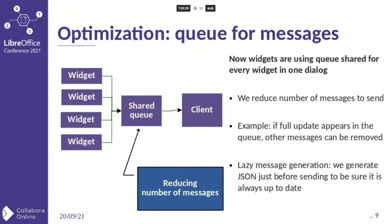The next optimization was introduced by using a shared queue for messages. Thanks to that we can reduce the number of messages by removing some from the queue. For example, when we receive a full update, we don't need all the previous messages, so we can simply remove them. Another small update is lazy message generation: in the queue we have only the information about which widget was updated and what kind of update it was, but we generate the JSON just before we send it.